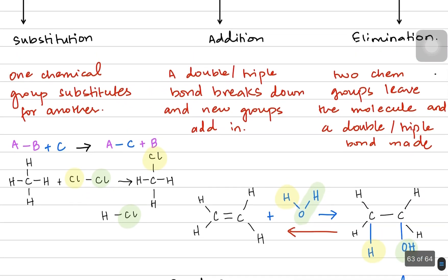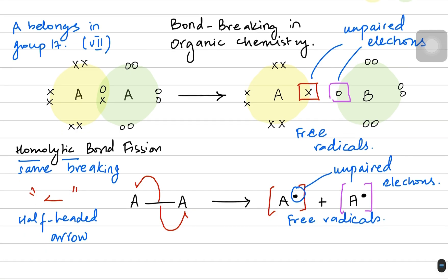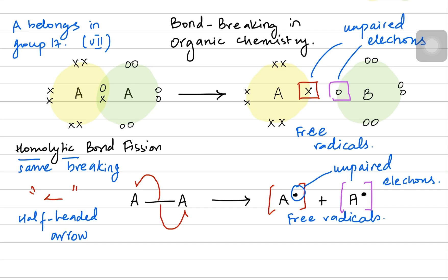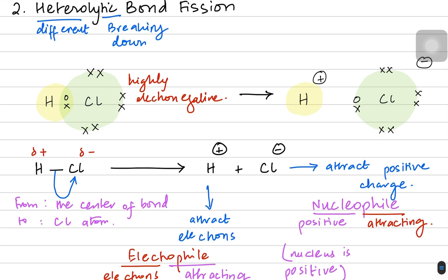Let's recap: substitution means one chemical group is replaced by another. Addition means a double or triple bond breaks and two new groups join in. Elimination means two groups leave and a double or triple bond forms. Homolytic bond fission breaks the bond equally — both atoms receive an unpaired electron and become free radicals, shown with half-headed arrows. Heterolytic bond fission gives one atom the full bond pair, producing an electrophile (positive ion) and a nucleophile (negative ion), shown with a full-headed arrow.